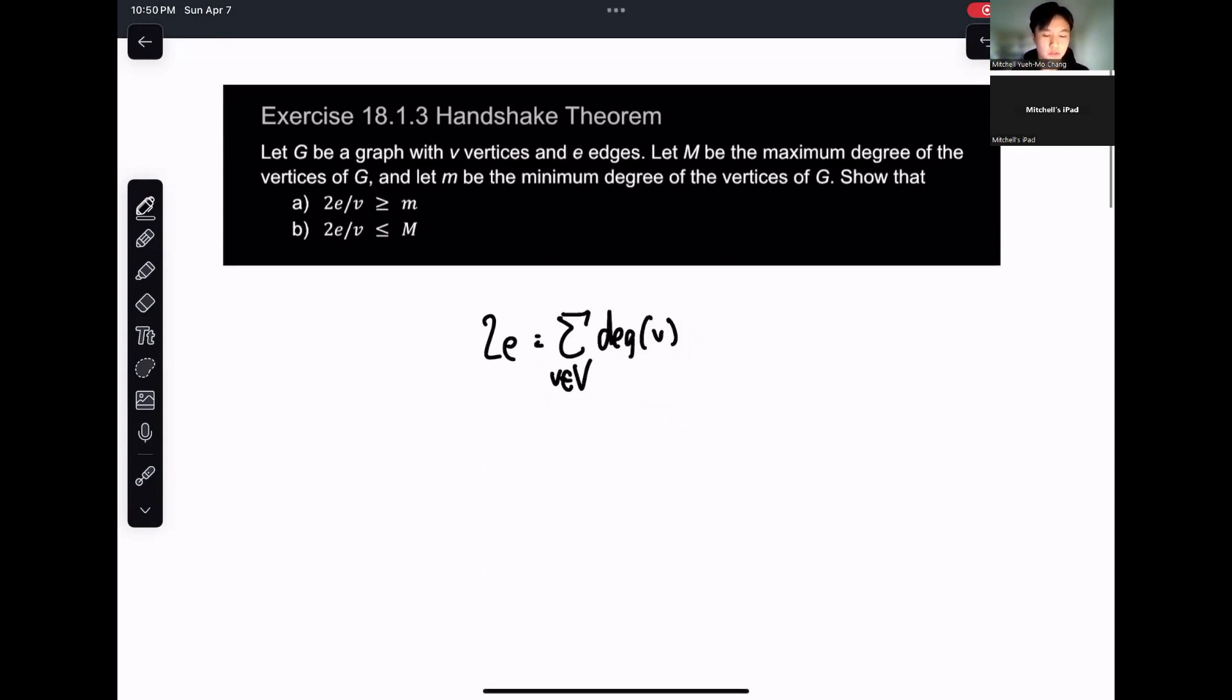With this in mind, we have to use this to answer this question. The question is: let G be a graph with V vertices and E edges. Let capital M be the maximum degree of the vertices of G and let lowercase m be the minimum degree of the vertices of G.